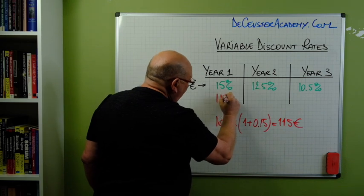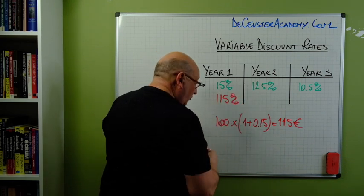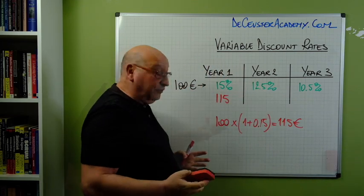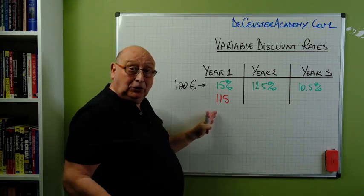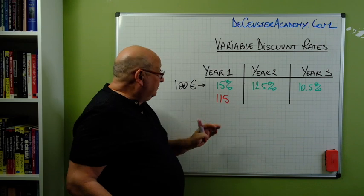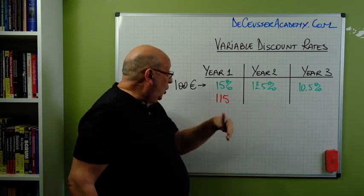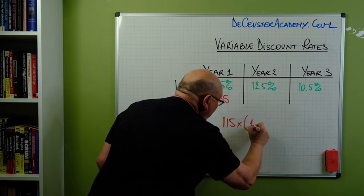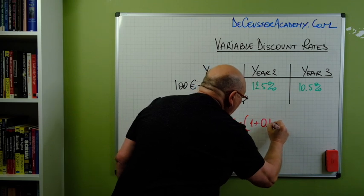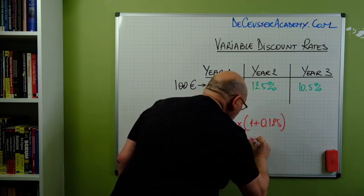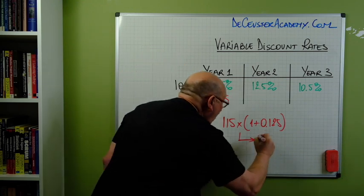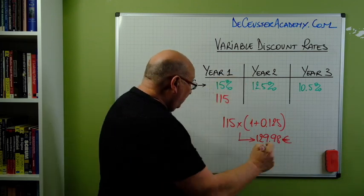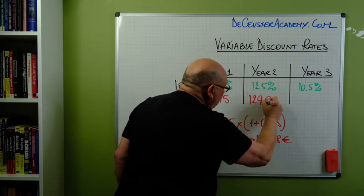So we have 115 euro — that's the first element. What do we do now? Instead of multiplying again with 1.15, we have to apply the new interest rate. So we multiply 115 with 1 plus 0.125, and this gives us a result equal to 129.98 euro.